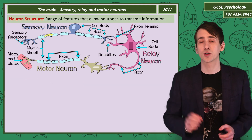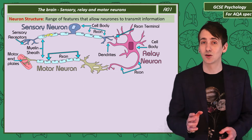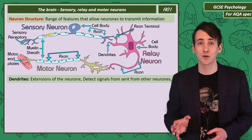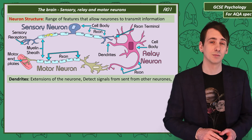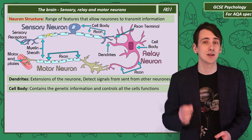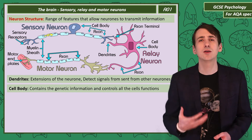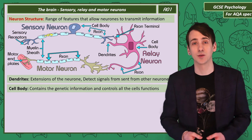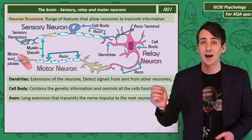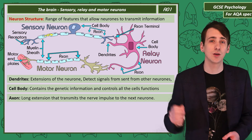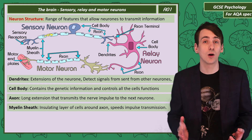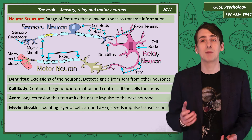Let's look in more detail at the structure of the neurons. Dendrites are the extensions of neurons that detect signals sent from other neurons. The cell body, common in all cells, contains the genetic information of the nerve cell and controls the cell's functions. The axon is the long extension of the nerve cell that allows it to pass messages on to other nerve cells. Axons are often, but not always, covered in a myelin sheath.